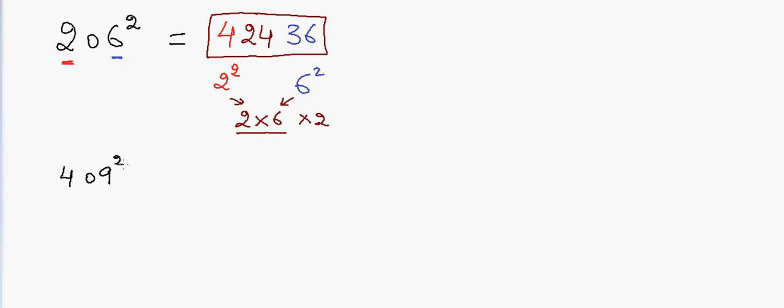Let me take another example. Suppose I have 409 and I want to square it. In that case, 4 squared equals 16, 9 squared equals 81, and 4 into 9 into 2, so 9 into 8 is 72. So my answer is 167,281.